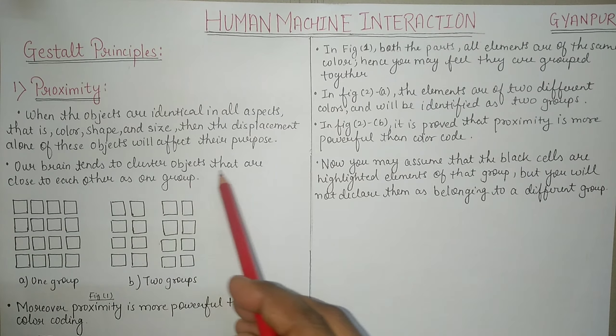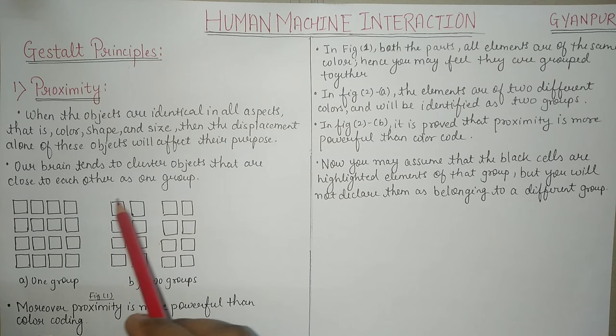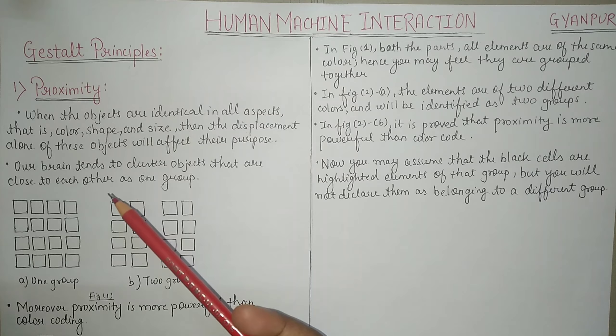Our brain tends to cluster objects that are close to each other as one group. We always cluster objects if they are proximity to each other, basically they are close to each other.